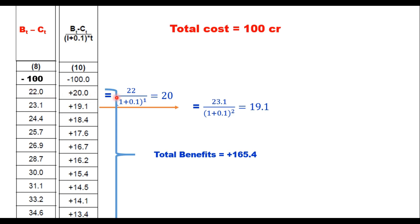So just to explain it again. This 20 is 22 upon 1 plus 0.1 power 1, that is 20. This 19.1 is 23.1 upon 1 plus 0.1 power 2, that is 19.1. Similarly you calculate for each row and total benefits is 165.4 against total cost of 100 lakhs. And therefore BC ratio is now 165.4 upon 100 that is 1.654. If it is more than 1, that indicates that the project is justifiable. That is benefit cost ratio method.